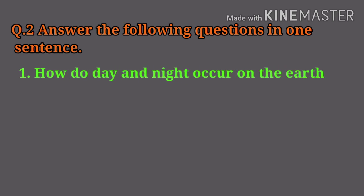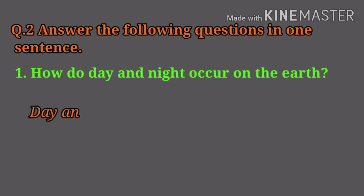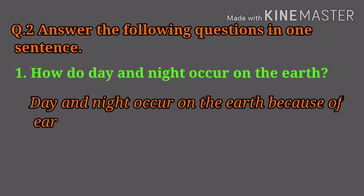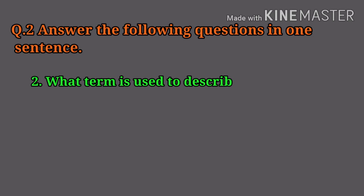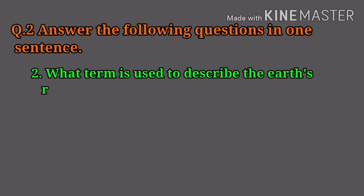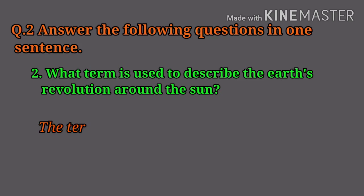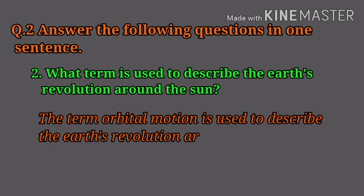Question number two: Answer the following questions in one sentence. How do day and night occur on the earth? Day and night occur on the earth because of earth's rotation. What term is used to describe the earth's revolution around the sun? The term orbital motion is used to describe the earth's revolution around the sun.